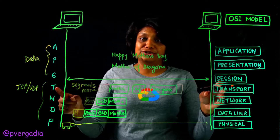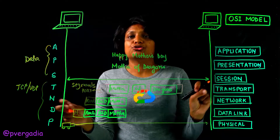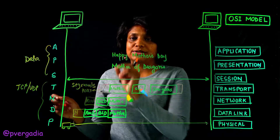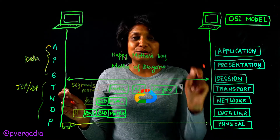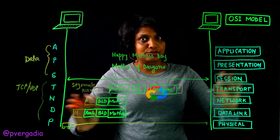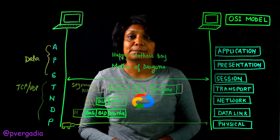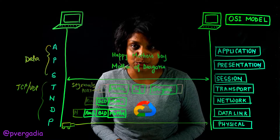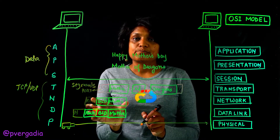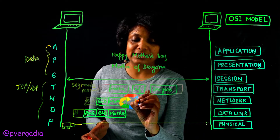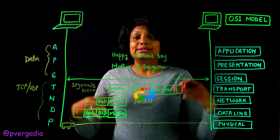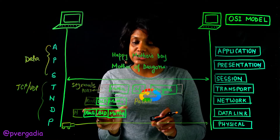Over the network, you want to find the best route from one computer to another, and that happens through BGP — the Border Gateway Protocol — along with the IP address. BGP defines the route the packet is going to take from one computer to another. That happens at the Network layer, and at this point the data is referred to as a packet.